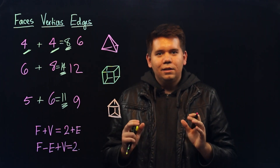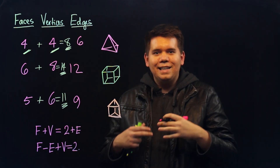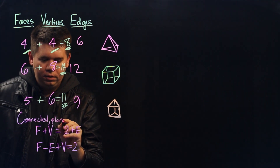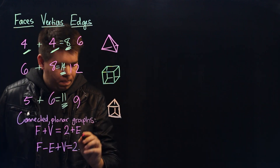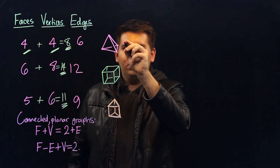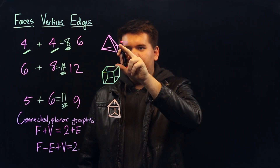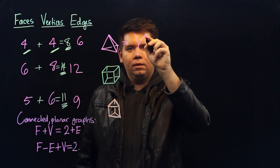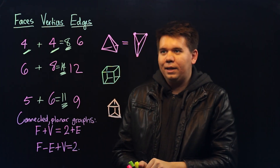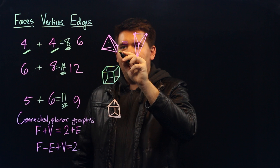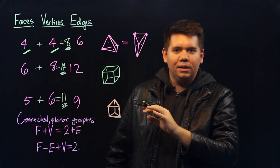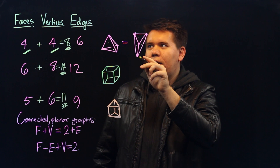It turns out that Euler's insight doesn't just apply to polyhedra — it's actually a fact about connected planar graphs. After all, any such polyhedra is secretly a connected planar graph. Look at the tetrahedron. We can redraw its vertices and edges like this, so that no two edges are crossing each other. If we want to count the faces, just as before we had 1, 2, 3, and in front a fourth face — here we have 1, 2, 3, and outside the outside region comprising four faces. We have our four vertices and we have our six edges.